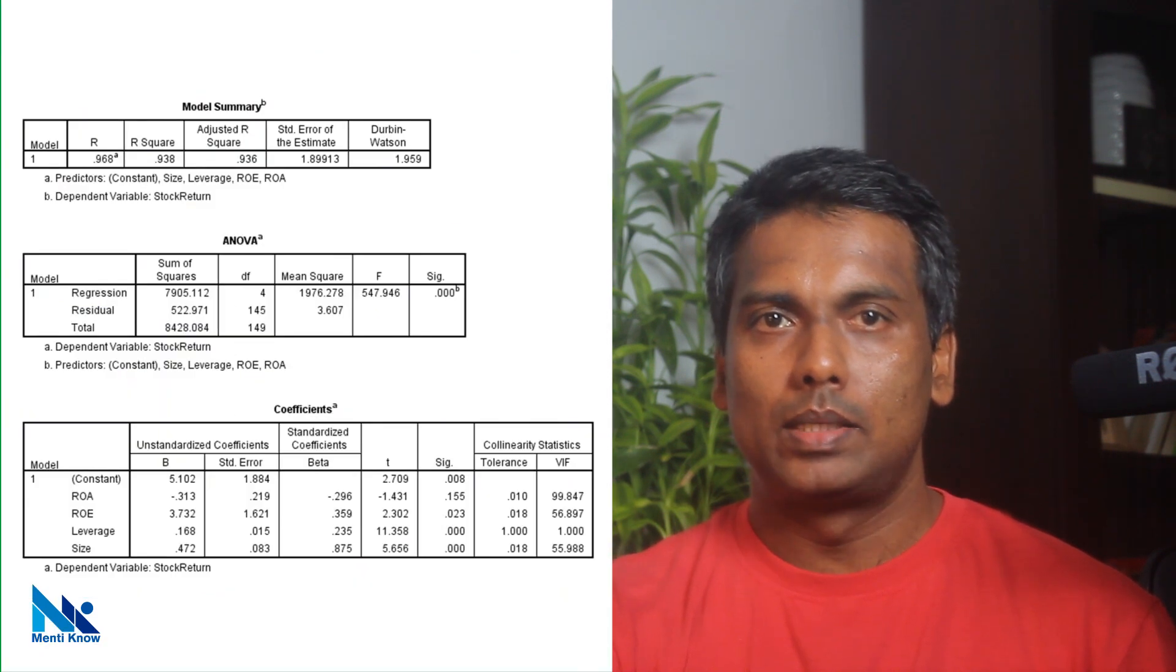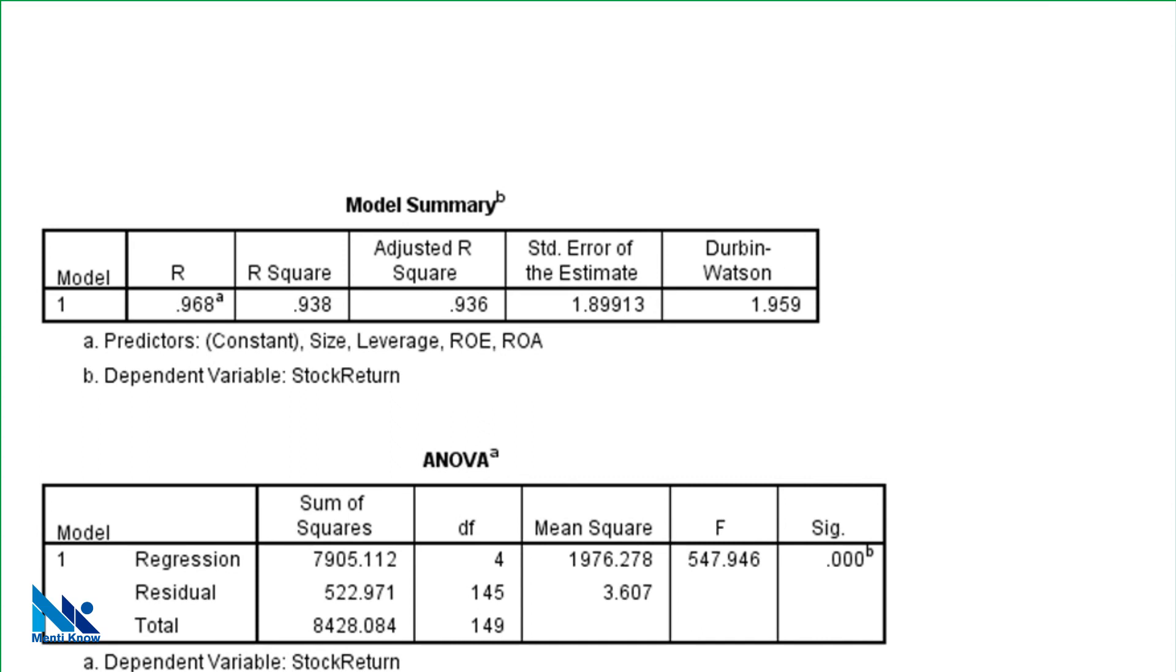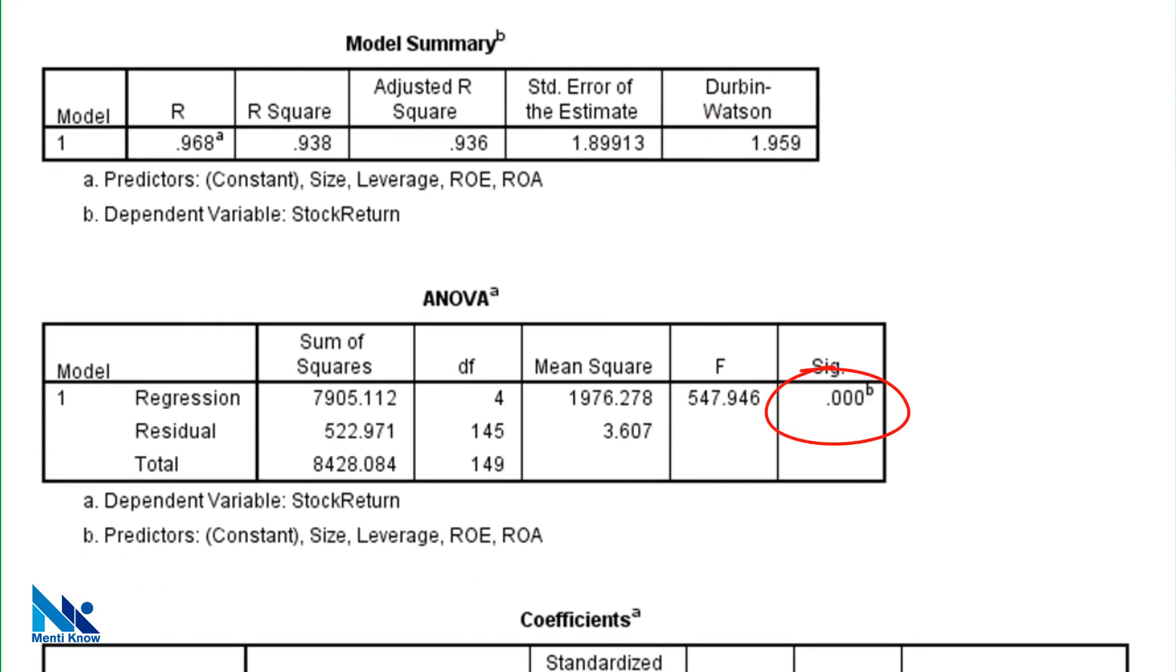Now let's have a look at the regression results. First we can see that the Durbin and Watson test statistic is almost equal to 2 indicating compliance with independence assumption. And our model is significant too.